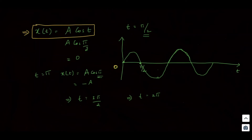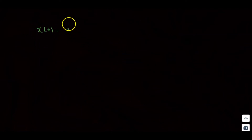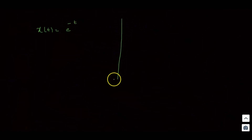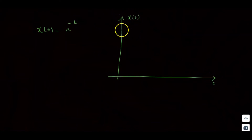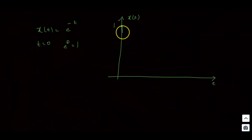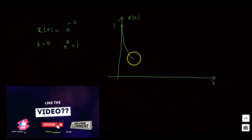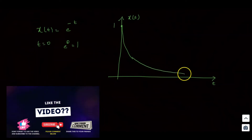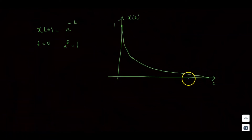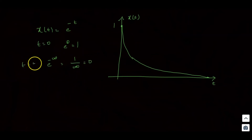Suppose x(t) = e^(−t). This is an exponentially decreasing signal. At t = 0, e^0 = 1. As t approaches infinity, e^(−∞) = 1/∞ = 0. So the signal starts at 1 and decreases to 0.